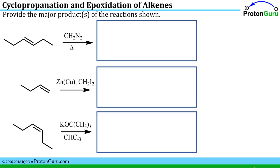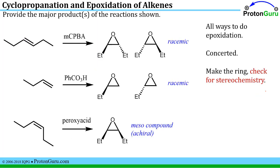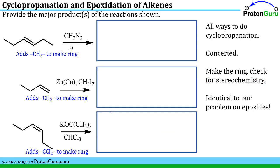Now we have the same three starting materials but with changed conditions. These three conditions are all ways to do cyclopropanation — we take the alkenes and make cyclopropane rings. Like epoxidation, this is a concerted step, so we make the ring and check for stereochemistry. Otherwise this is identical to our epoxide problems; wherever we had an O in the ring, we'll have a carbon in the ring. There are three different ways to make the cyclopropane ring — check with your textbook and instructor, as not every course teaches them all.